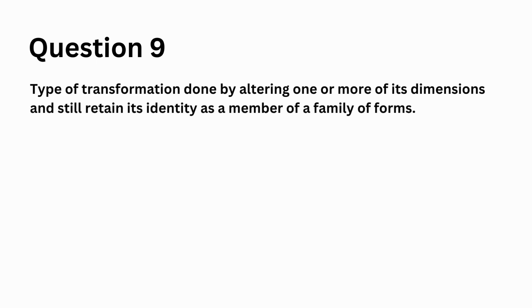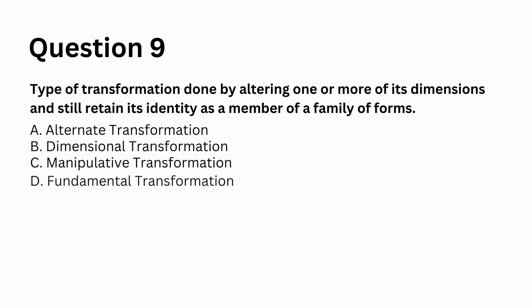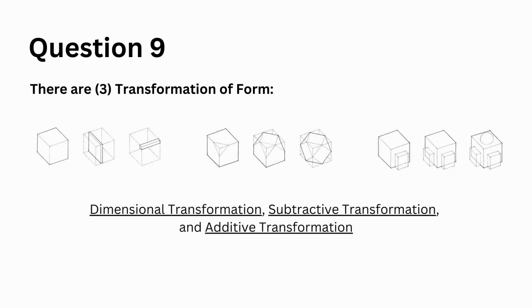Type of transformation done by altering one or more of its dimensions and still retain its identity as a member of a family of forms. A. alternate transformation, B. dimensional transformation, C. manipulative transformation, D. fundamental transformation. Answer: B. dimensional transformation. There are three transformations of form: dimensional transformation, subtractive transformation, and additive transformation.